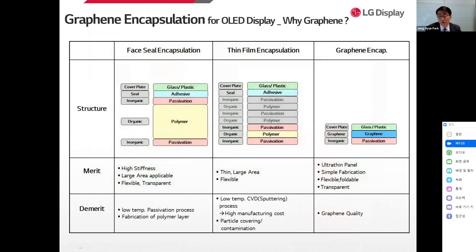This slide explains why we are working on graphene encapsulation development. The phase seal and TFE alternately stack organic and inorganic layers without empty spaces in the encapsulation structure. The inorganic layer contributes to the improvement of barrier performance, and the organic layer plays a role in relieving stress applied to the film while planarizing the device structure. Phase seal and TFE have disadvantages such as increased manufacturing cost due to multi-layer stacking and deterioration of inorganic layer performance due to low-temperature (under 100°C) silicon nitride passivation, as well as particles generated in the process.